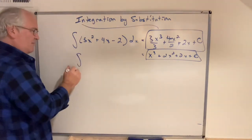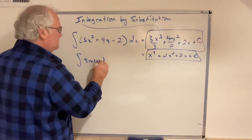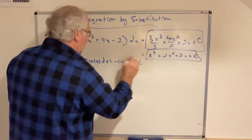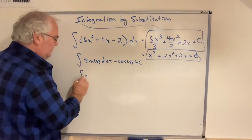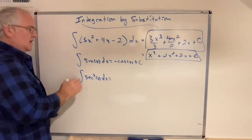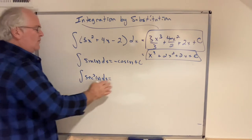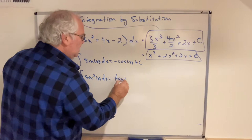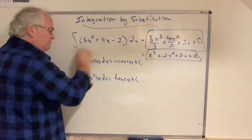The other are the basic forms. The antiderivative of sine of x — we know that to be negative cosine of x. That's one of the basic forms. We also know the antiderivative of secant squared of x. The reason we know negative cosine is correct is that the derivative of negative cosine equals sine. We want to find the function whose derivative is secant squared — well, we know that to be tangent. So these are just the basic forms, and this is the power rule.